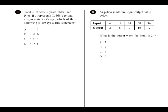Okay, question number five. Todd is exactly six years older than Rita. If T represents Todd's age and R represents Rita's age, which of the following statements is always a true statement? So we'll do a little bit of setup first. T equals Todd and R equals Rita.